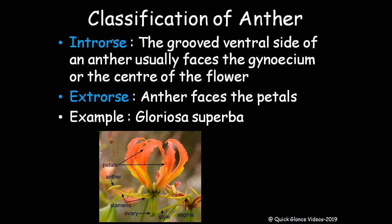Now we'll go into the classification of androecium depending upon the size of the filament, the anther, the number of lobes, and the dehiscence. Classification of anther: Introrse — the grooved ventral side of the anther usually faces the gynoecium or the central part of the flower. Extrorse type — anther facing the petals; for example, Gloriosa superba.